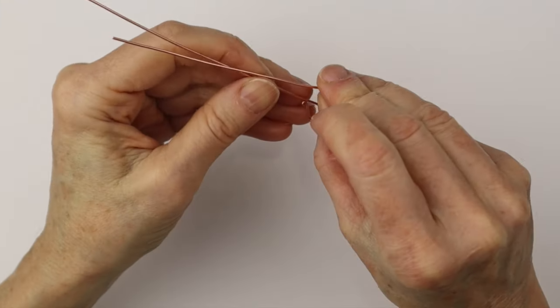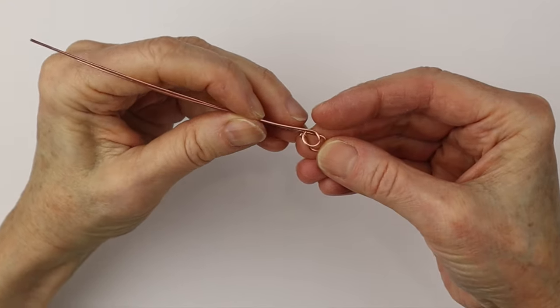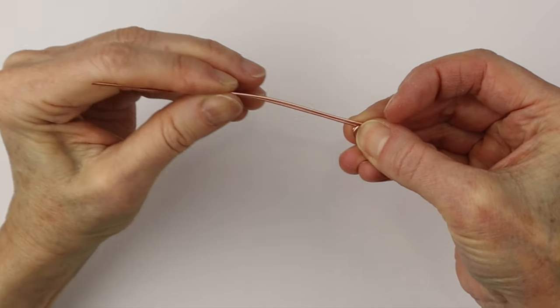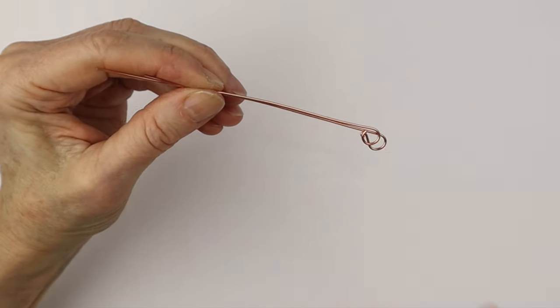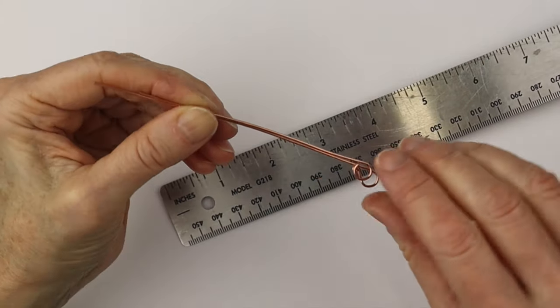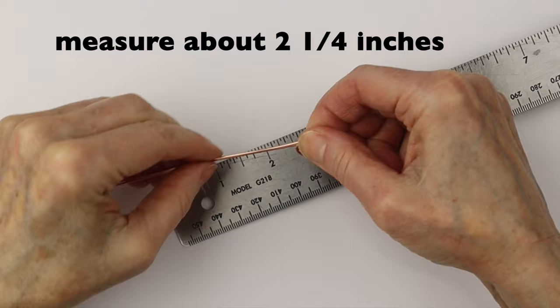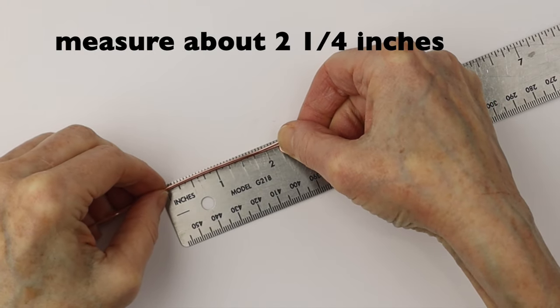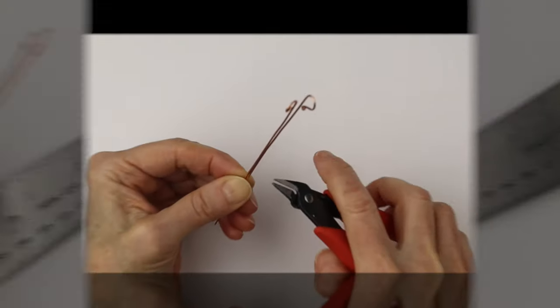Then we're going to put the two wires together. This is a little hack to make sure the spirals are the same size. We'll just put those two together, line them up, and then we're going to measure about two and a quarter inches depending on how big you want your spirals. That's a good size. Then clip the ends flush.